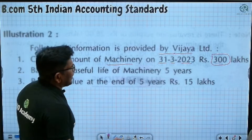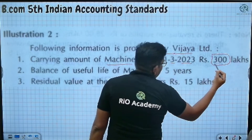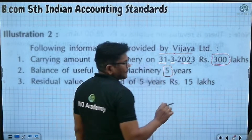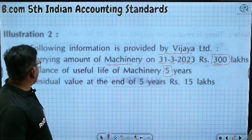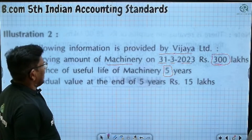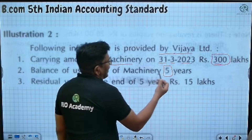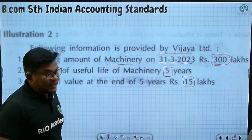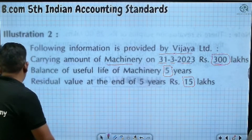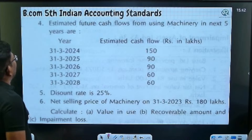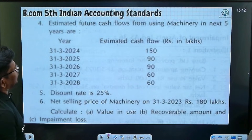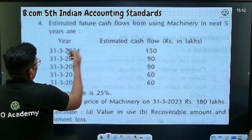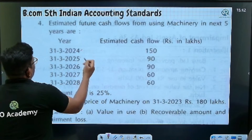The useful life as of the date is 23 years, with a value of 3 lakh in the month. The remaining useful life of the machinery is 5 years. The residual value at the end of five years — the scrap value — is also given in the question.